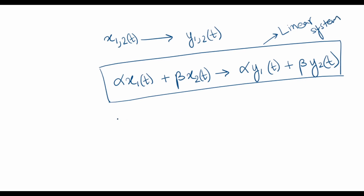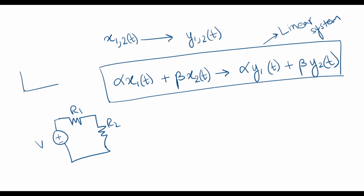So what constitutes a linear system? A simple resistive network like this is an example of a linear system, because the voltage and current follow a linear relation — that is, when current goes to zero, the voltage across the resistor also becomes zero.